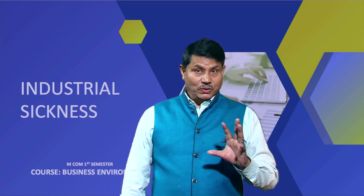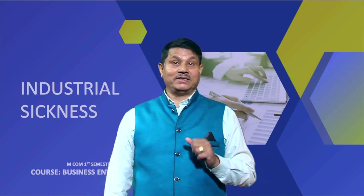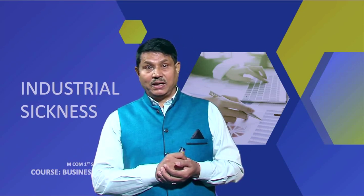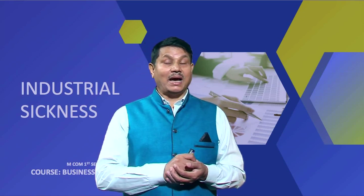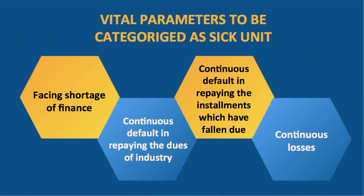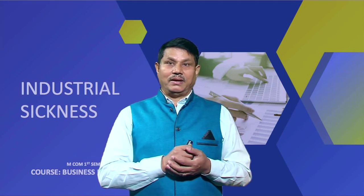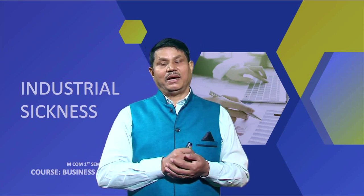After discussing those signals, we can summarize that the vital parameters to categorize a firm as a sick unit are: (1) continuously facing shortage of finance, (2) continuous defaults in repaying the dues of the industry and installments which have fallen due, and (3) continuous losses. If an industry shows these signals, that industry may be treated as a sick industry.